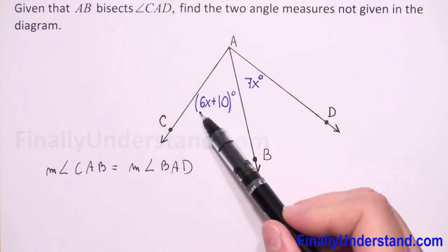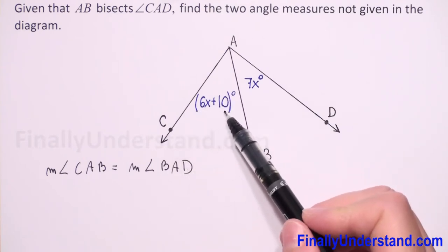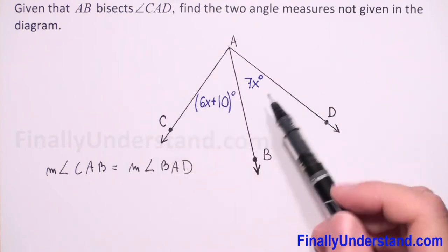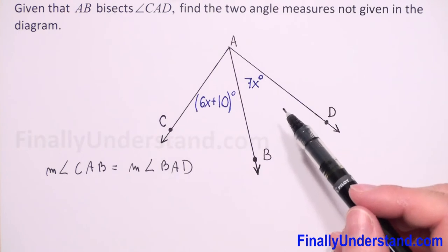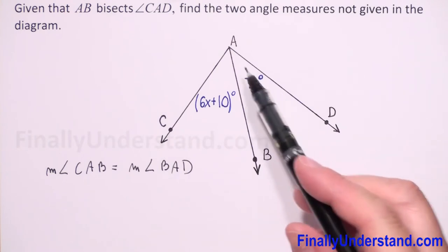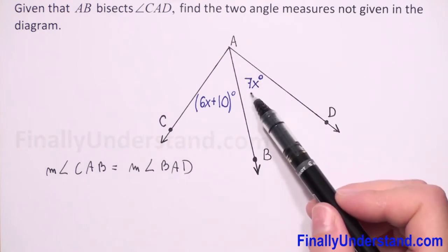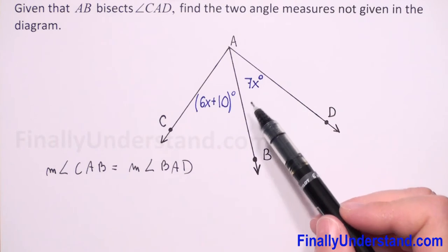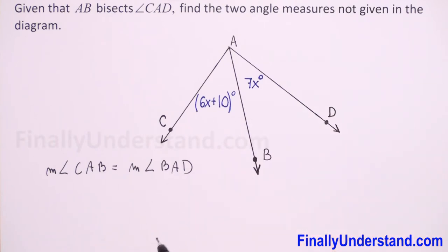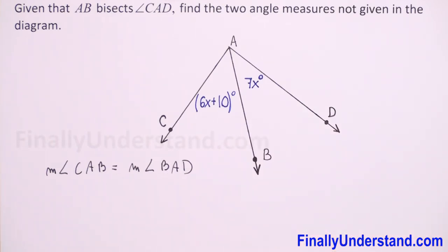We have given that the measure of angle CAB has the expression 6x plus 10, and the measure of angle BAD has the expression 7x. So we can substitute into our equation now.